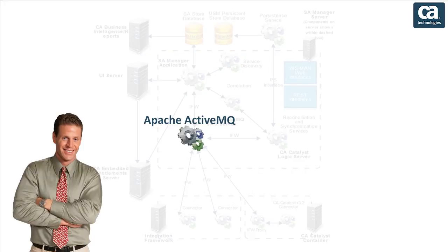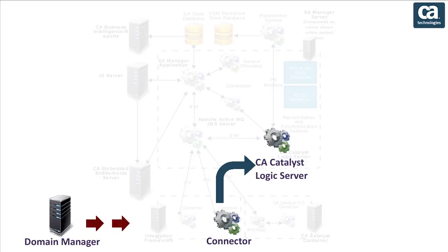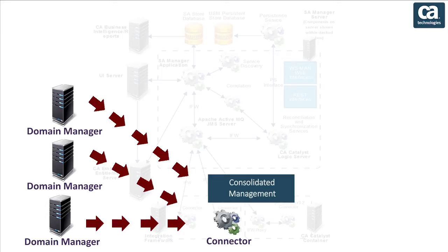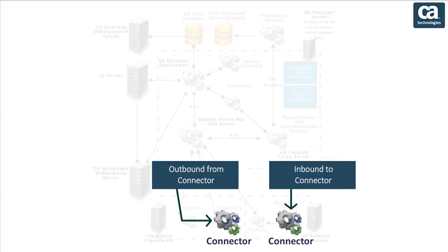Let us move on to the next component: connector. A connector is software that provides the interface for data exchange between the CA Catalyst infrastructure and a domain manager. Connectors are the gateway through which data is retrieved from various domain managers for consolidated management. Each integrated product has its own connector that supports one or both operation types: outbound from connector and inbound to connector.